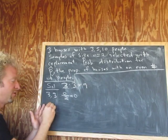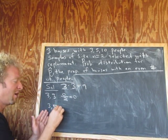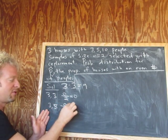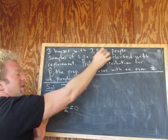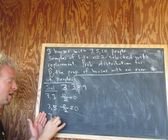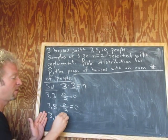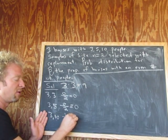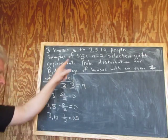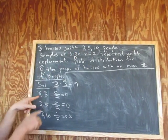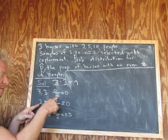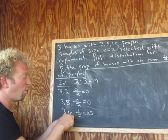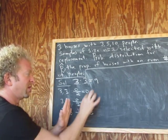What about three and ten? There's one even number — ten is even — out of two numbers, so p-hat equals 0.5. So for samples (3,3), (3,5): zero even numbers out of two, so p-hat equals zero. For (3,10): one even number out of two, so p-hat equals 0.5.